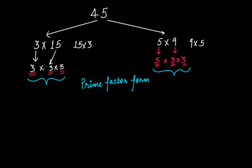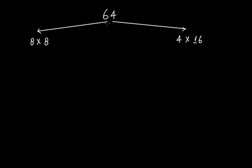What we've discussed is actually grade 6 mathematics. Prime factor form is this concept. Let's take one more example: the number 64. We can write 64 as 8 multiplied by 8, and we can also write 64 as 4 multiplied by 16. Let's focus on these two: 8 multiplied by 8 and 4 multiplied by 16.